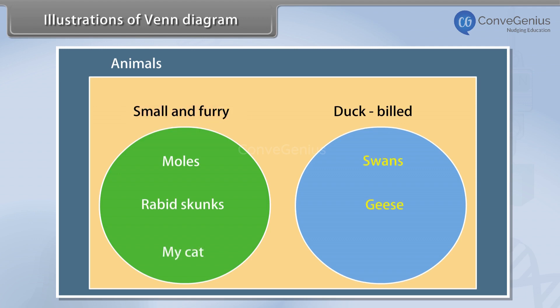Swans, Geese, and Edmontosaurus are all duck-bills. Worms are small but not furry, and horses are furry but not small, and neither is a duck-bill. However, they are animals. They fit inside our universe, but outside the circles.